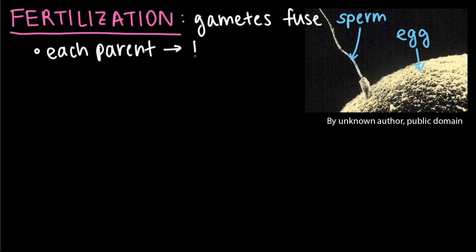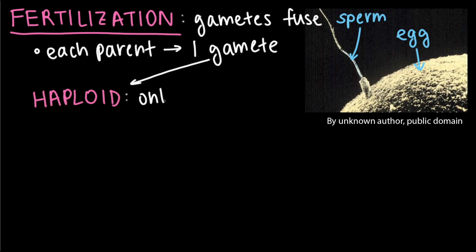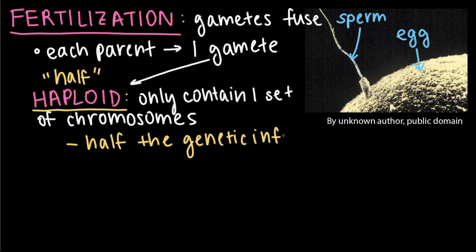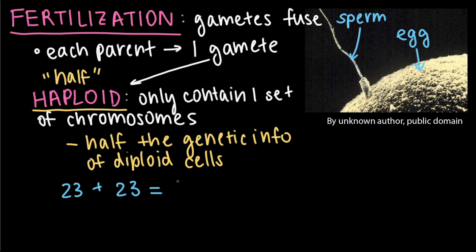So you might be wondering: if each parent organism's cells are diploid, and offspring result from the fusion of cells from two parents, how do offspring of sexual reproduction maintain the same number of chromosomes? Well, diploid organisms form gametes that are haploid, meaning they only contain one set of chromosomes. Haploid cells have half the genetic information of diploid cells. A human haploid gamete, for example, contains 23 single chromosomes — one of each homologous pair. When gametes fuse during fertilization, that brings the total number of chromosomes back to 46, or 23 homologous pairs.